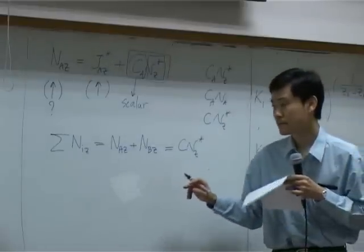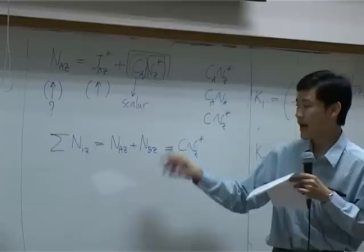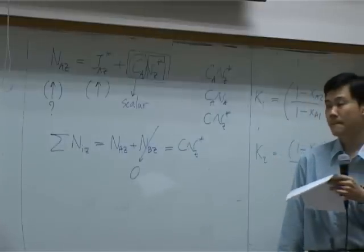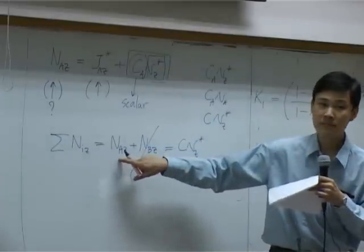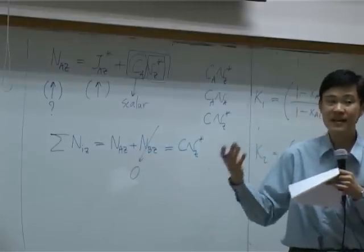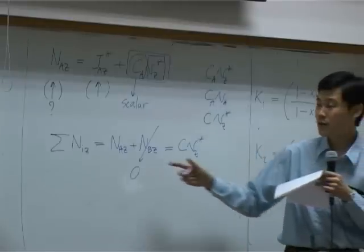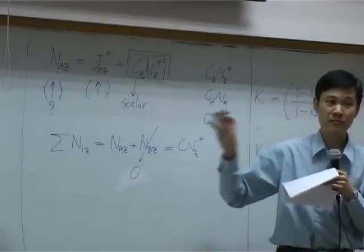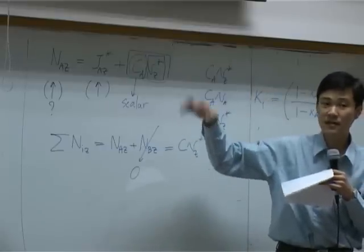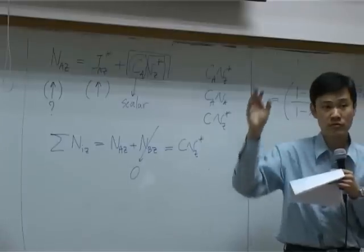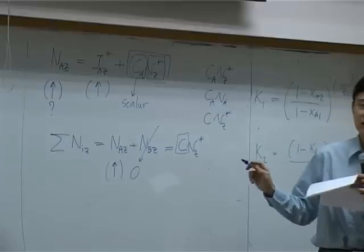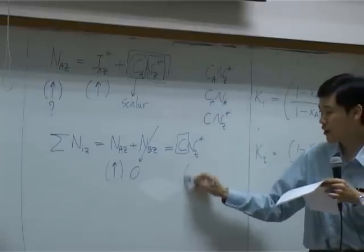The direction of n_az actually determines the direction of v_z*, simply because n_bz is zero. By physical meaning, n_az is the net evaporation rate. When you stand at a stationary point and look into the system, more of species a is moving upward because it is continuously evaporating. Therefore the flux of a goes upward, so n_az is positive. Since c is a scalar and does not affect direction, v_z* must also be upward.